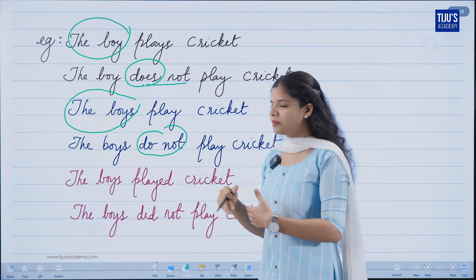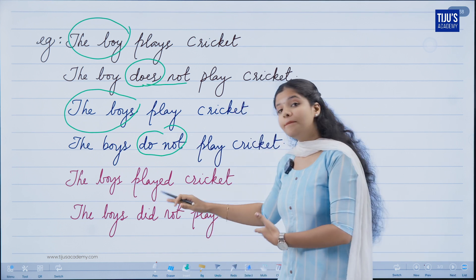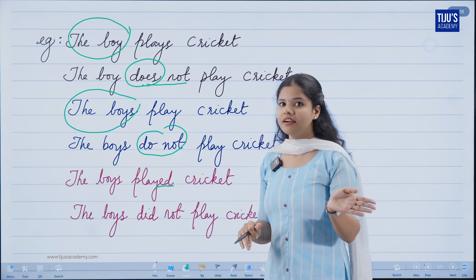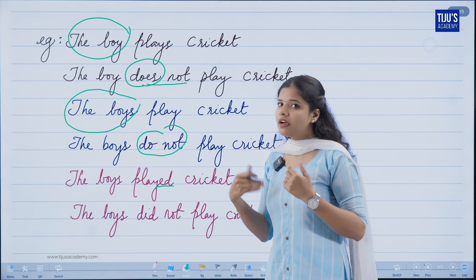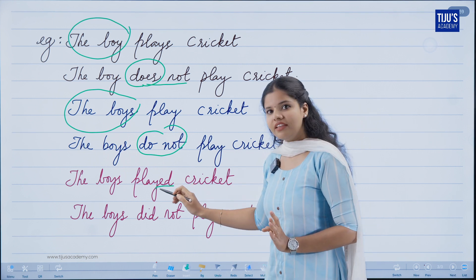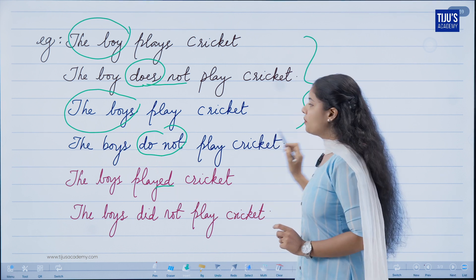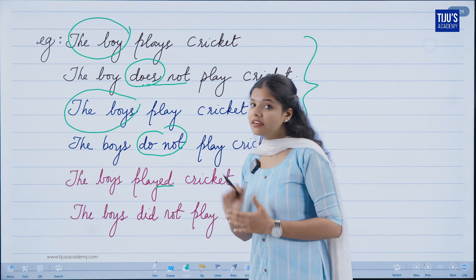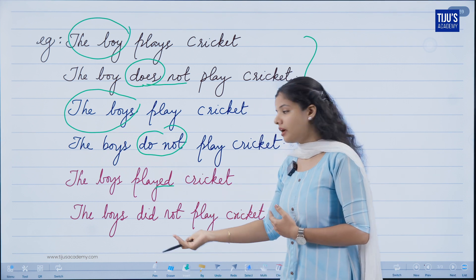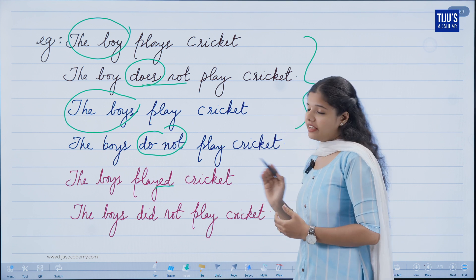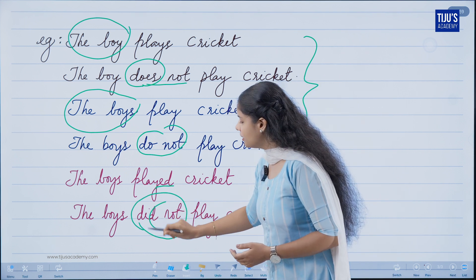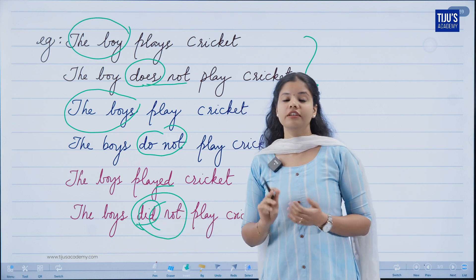Finally, we think about past tense. 'The boys played cricket' — played is past tense. How do we transform this into a negative sentence? 'The boys did not play cricket.' When we use did not, the main verb goes back to its base form.